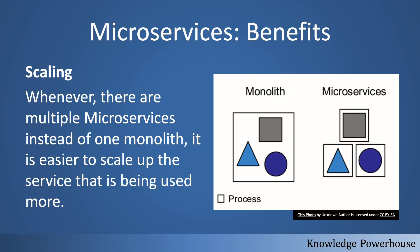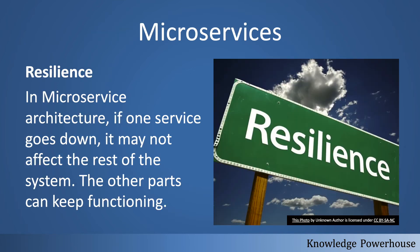Scalability is a key benefit of microservices. If we have multiple microservices instead of one monolith, we can scale only the specific service being used heavily. With a monolith, the whole system has to be scaled up. With microservices, whichever service is heavily used — for example, product search — can be scaled to run on multiple servers, while less-used services like product buy can remain on fewer hardware instances.